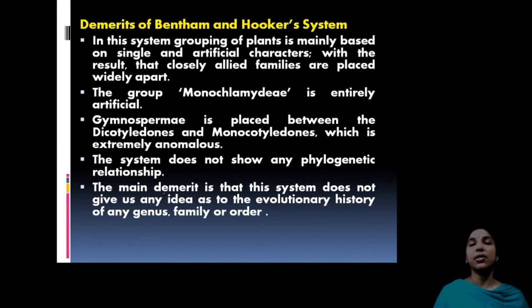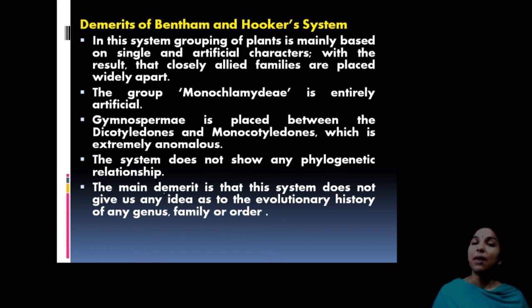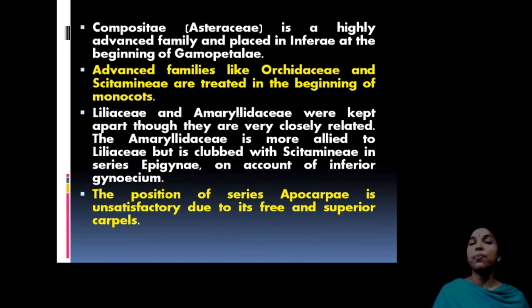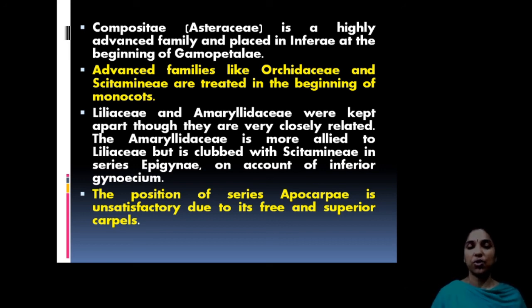The main demerits: it is not a phylogenetic system and no evolutionary relationships are discussed. The characters used are artificial. Related families are placed wide apart. The group Monochlamydeae is entirely artificial. Keeping gymnosperms between dicots and monocots is illogical. No evolutionary history is described. Asteraceae is an advanced family but is placed first in Gamopetalae, which is incorrect. Similarly, Orchidaceae is advanced among monocots but is kept in the first position. Liliaceae and Primulaceae share characters but are kept apart.